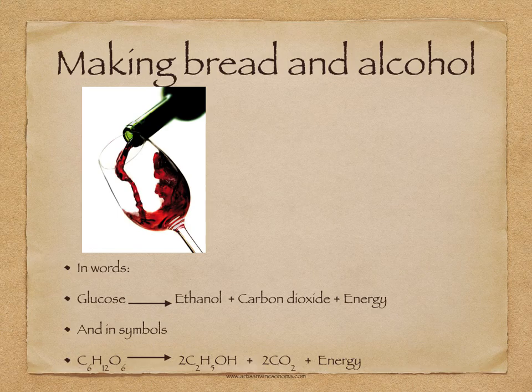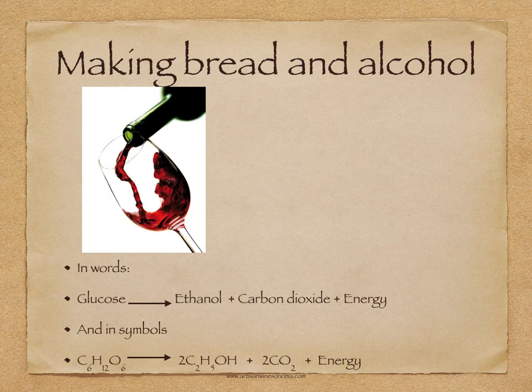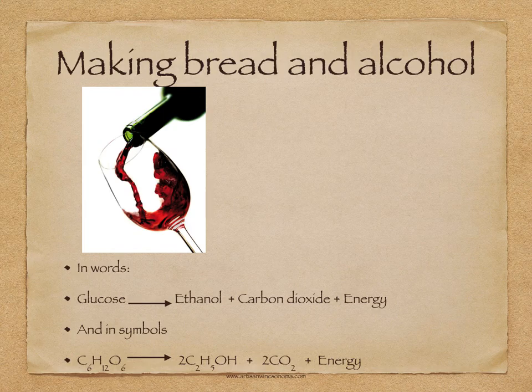Yeast also respires anaerobically. Yeast in plants can respire anaerobically, but instead of lactic acid being produced, they produce ethanol, which is an alcohol. The equation for yeast and plants is: glucose is converted into ethanol and carbon dioxide and energy. If you're doing extended, you need to know the equation in symbols: C6H12O6 → 2C2H5OH + 2CO2. Notice how there are two products being formed: carbon dioxide and ethanol.